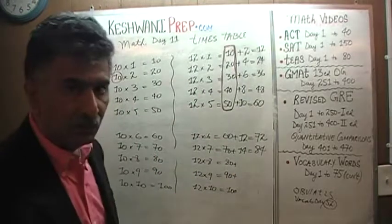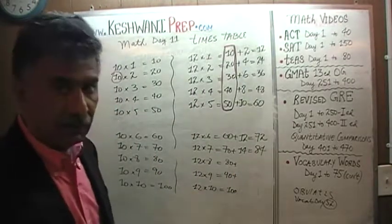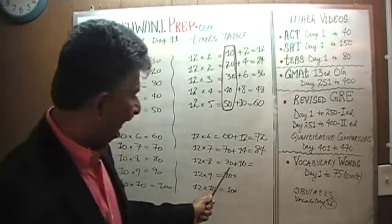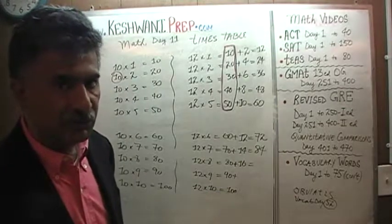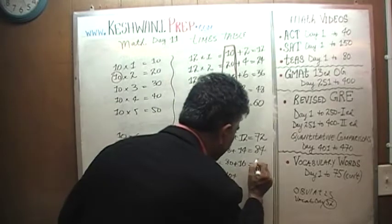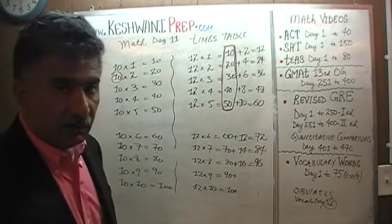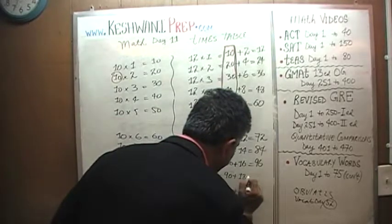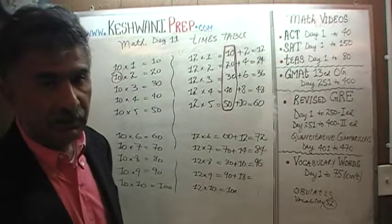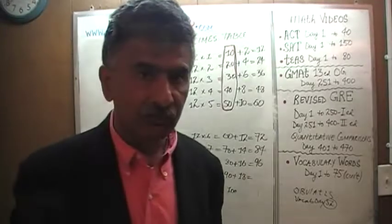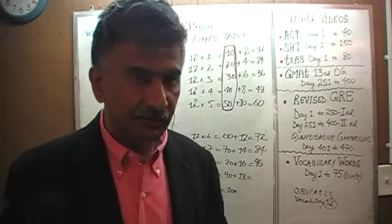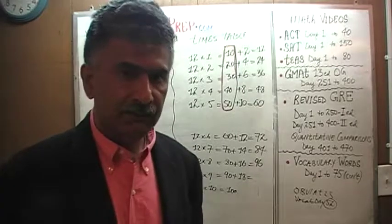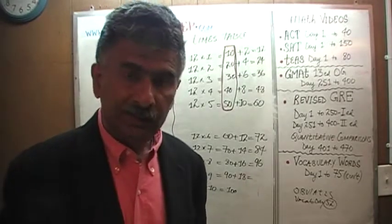12 eights are the same as 10 eights — 80 — and then two more eights, that's 16. 80 plus 16 is the same as 80 plus 10 which is 90, plus six more, giving 96. 12 nines are going to be 10 nines and then two more nines — we need 18. 90 plus 18 is the same as 90 plus 10 plus 8. We break up 18 into 10 and 8 because it's easier to add 10 first: 90 plus 10 is 100 and then 8 more, so 108.